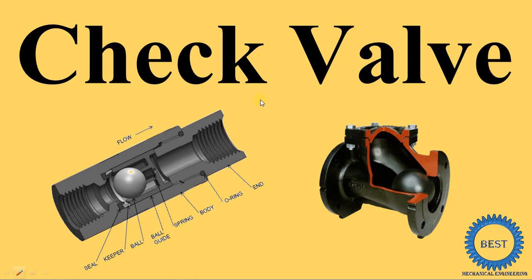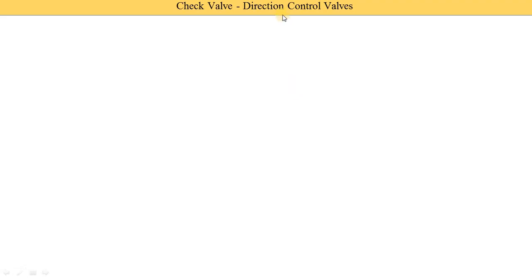In this video, I explain the construction and working of a check valve. A check valve is a type of direction control valve, meaning it is used to control the direction of the working fluid. If it is used in a hydraulic system, it controls the direction of oil. If used in a pneumatic system, it controls the direction of compressed air or gas.